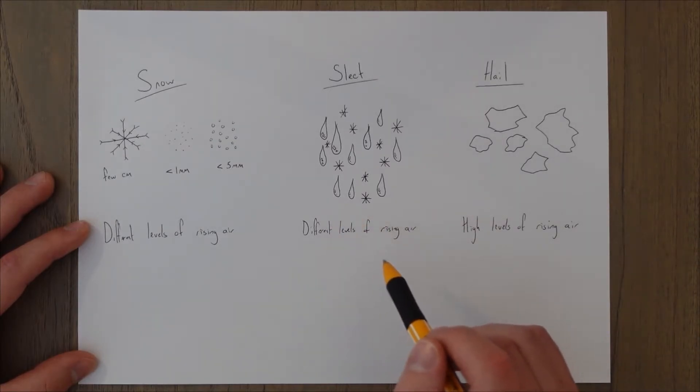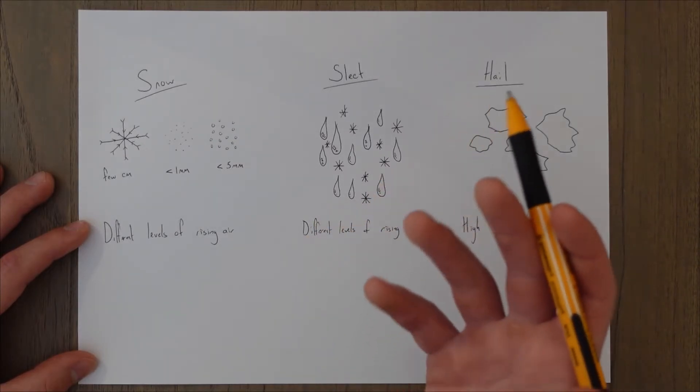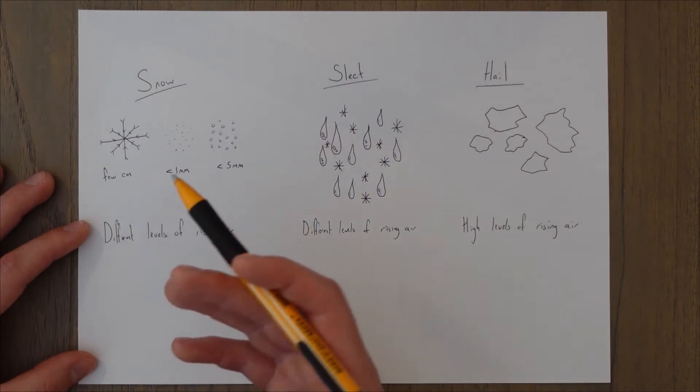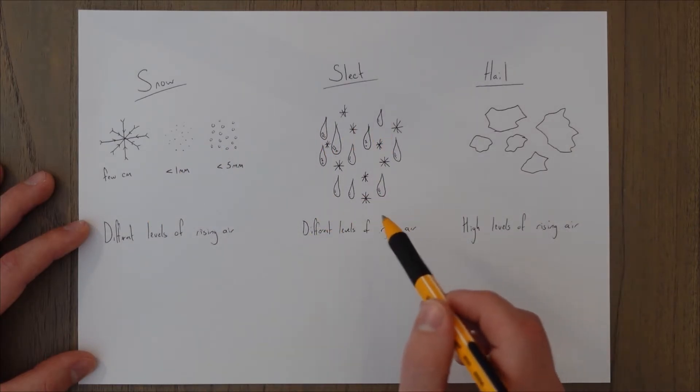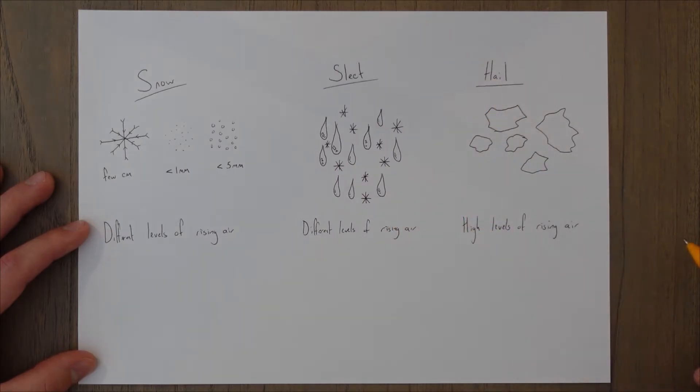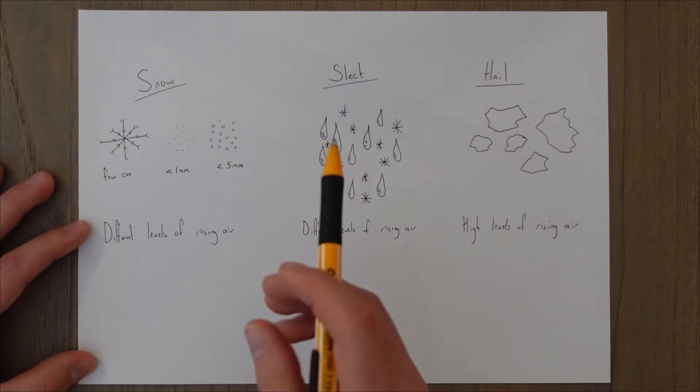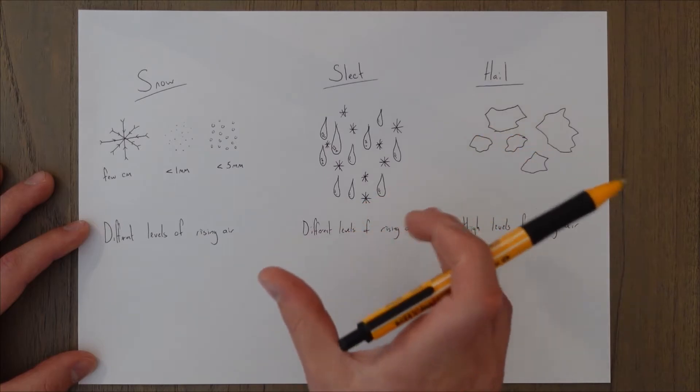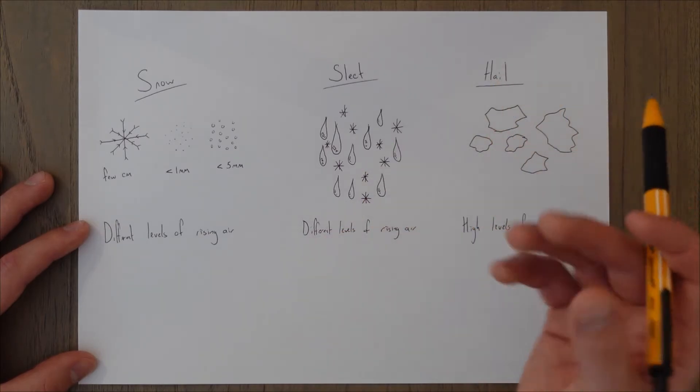Again this is no strict rule on if this is going to come from cumuliform or stratiform clouds. It's going to be different levels of rising air and the particle size will tend to be different. If you've got more stable conditions it'll be smaller particles, more unstable conditions it's going to be larger particles.